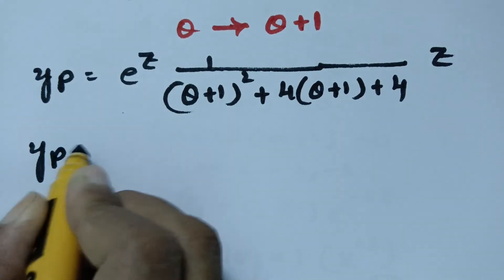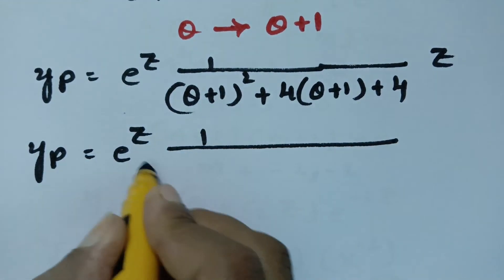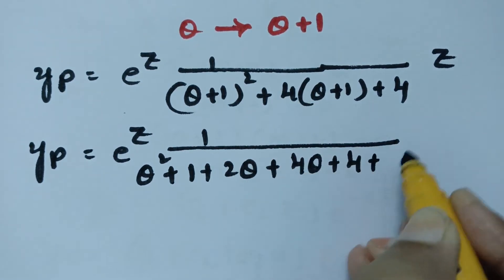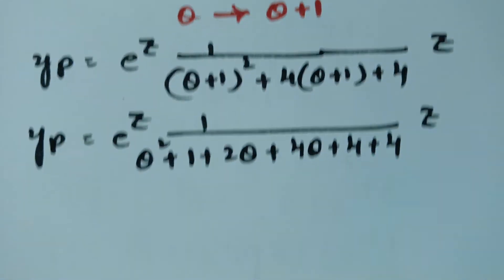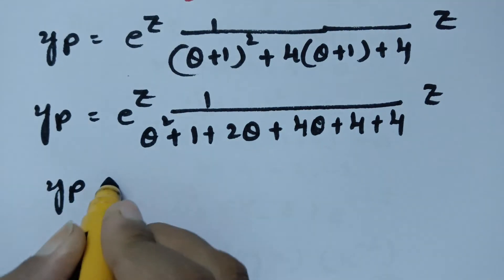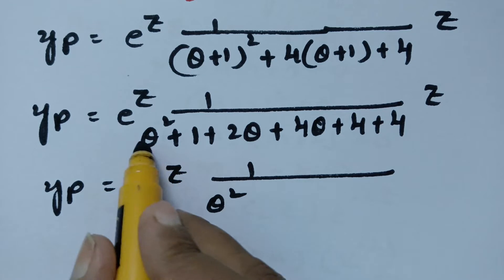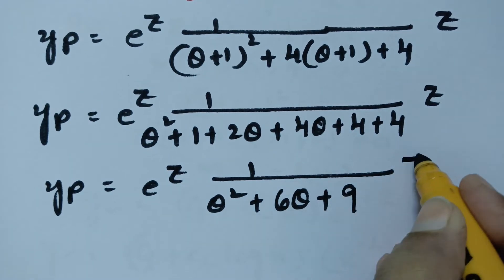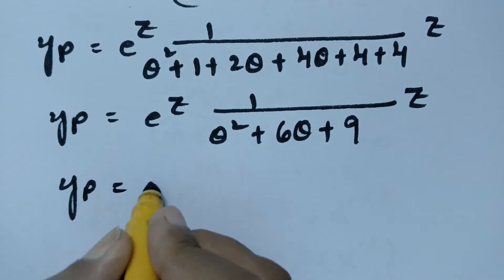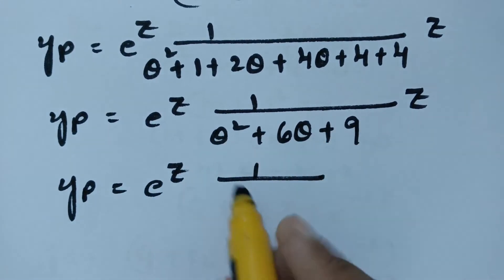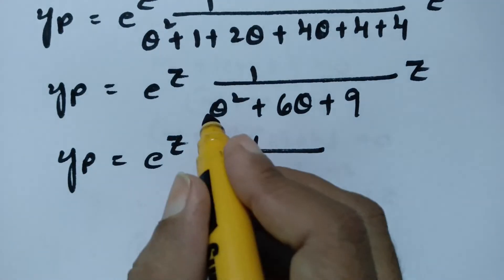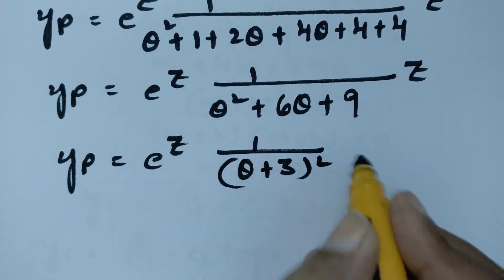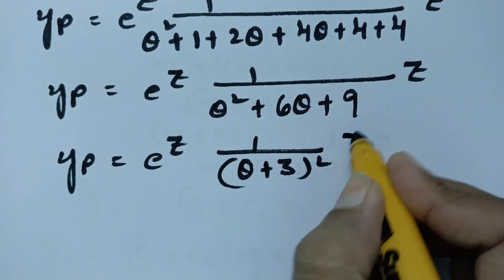Expanding: yp equals e to the power z times 1 over (theta squared plus 2 theta plus 1 plus 4 theta plus 4 plus 4) times z, which simplifies to e to the power z times 1 over (theta squared plus 6 theta plus 9) times z. This denominator is (theta plus 3) squared, which can be written as 3 squared times (1 plus theta over 3) squared.